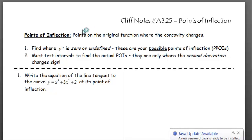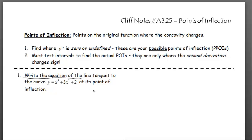We're going to be working with points of inflection. Write the equation of the line tangent — so stop right here. When you read 'write the equation of a line,' you think point-slope. Thinking point-slope, we're going to need an x and a y coordinate and a slope.